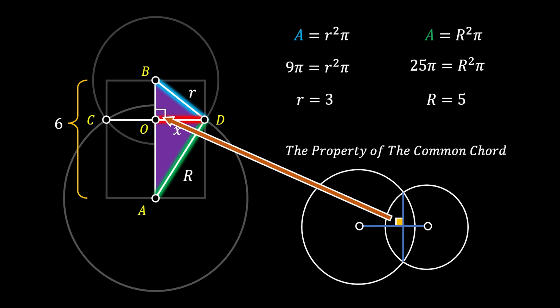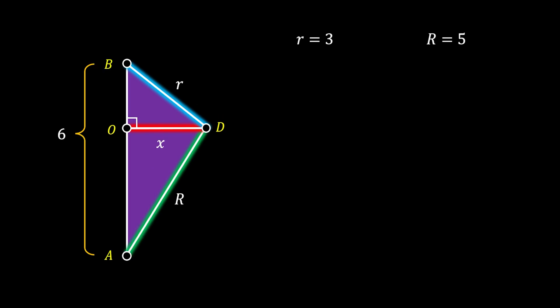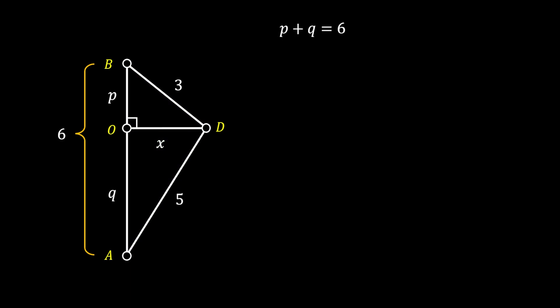Now we're going to zoom into this triangle for better understanding. We're going to replace the values of small r and capital R, and label the segment OB as p and OA as q. From here we can easily see that the sum of p and q must be equal to 6, so p must be equal to 6 minus q. Then we can notice the right triangle ODB and use the Pythagorean theorem to find the leg x.